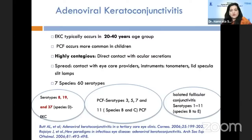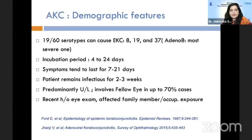Nowadays any viral conjunctivitis has become very important because of COVID times. There are seven species involved, each linked to a particular clinical manifestation. Serotypes 8, 19, and 37 are responsible for EKC, and serotypes 3, 5, 7, and 11 are responsible for pharyngoconjunctival fever. The incubation period is generally 4 to 24 days, symptoms tend to last for 7 to 21 days, and the patient remains infectious for 2 to 3 weeks.